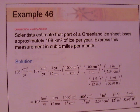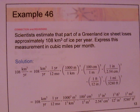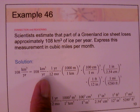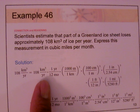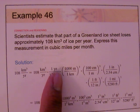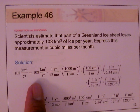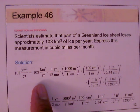Example 46: scientists estimate part of a Greenland ice sheet loses approximately 108 cubic kilometers of ice per year. We need to estimate this in cubic miles per month. Starting with 108 km³/year, we convert per year to per month by multiplying by (1 year / 12 months), so the years cancel and we get per month.